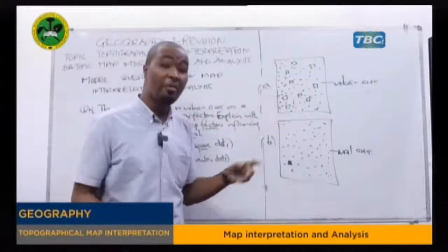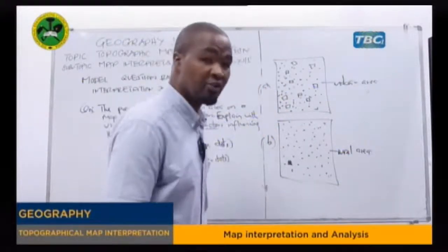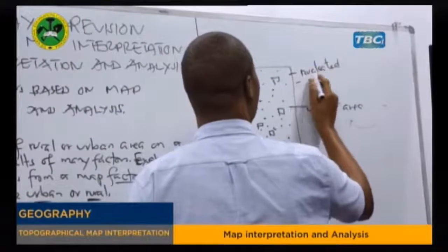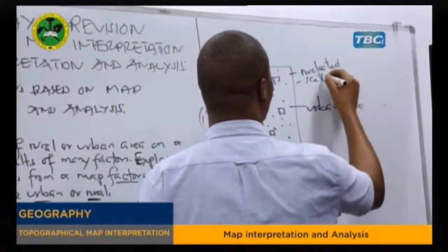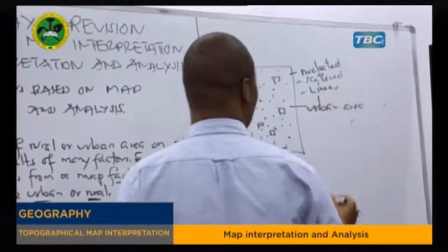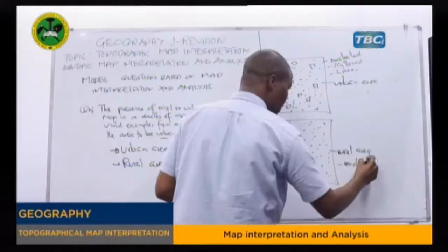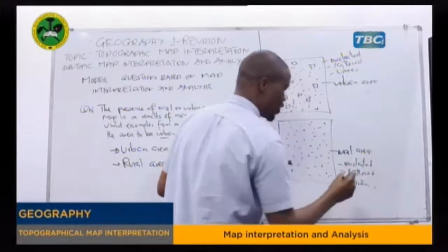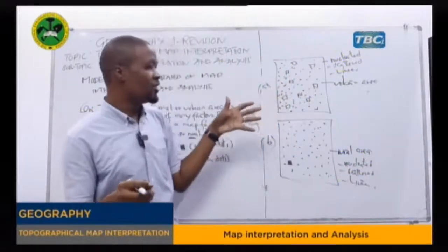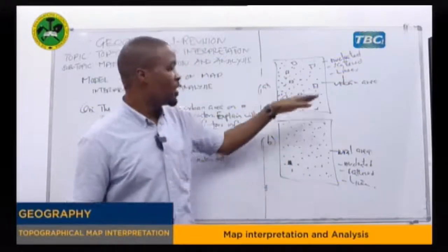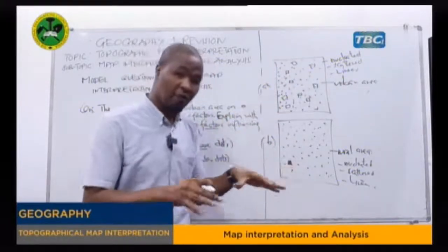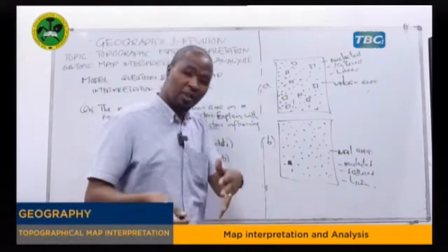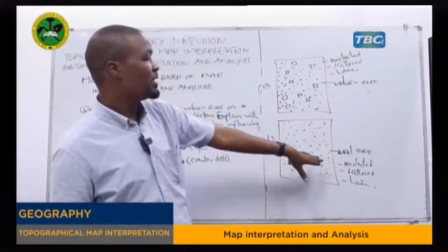In either urban or rural area, we may find some smaller types of settlement. In urban, we may find nucleated, scattered, and linear settlement. In rural, we may also find nucleated, scattered, and linear settlement. Nucleated means there is a compact concentration of many settlements in one area. Scattered means the dispersal of settlement across different areas. Linear means the arrangement of settlement along a river, railway, or roads. Those are the patterns of settlement.